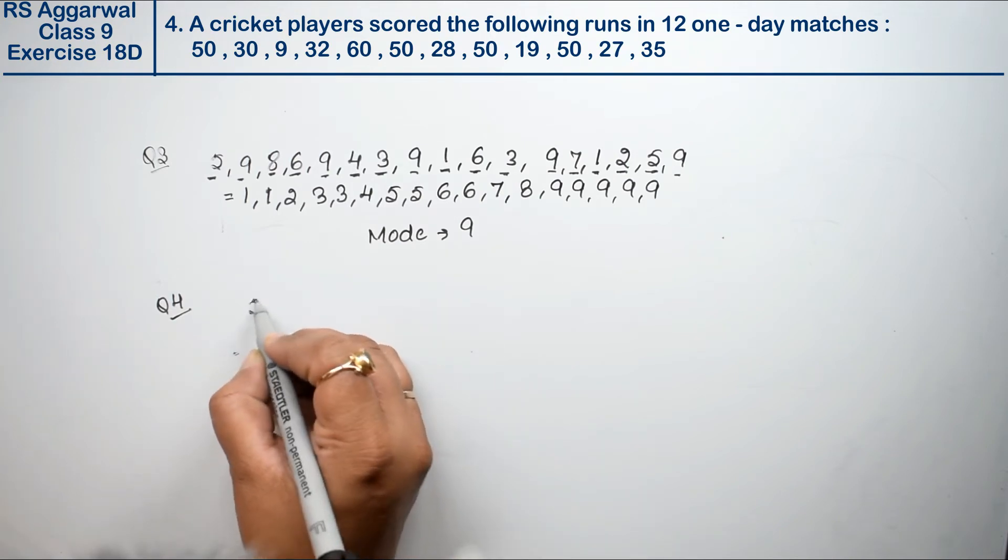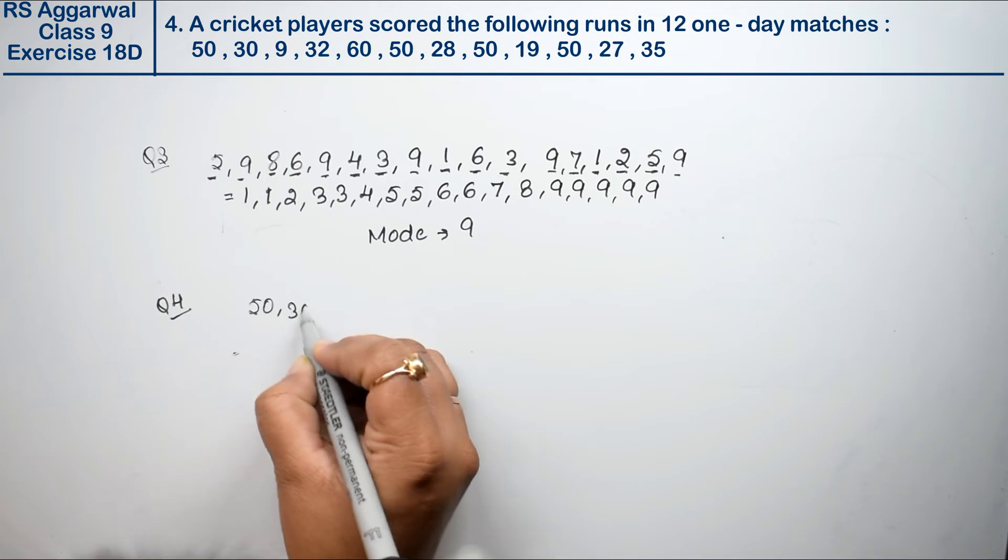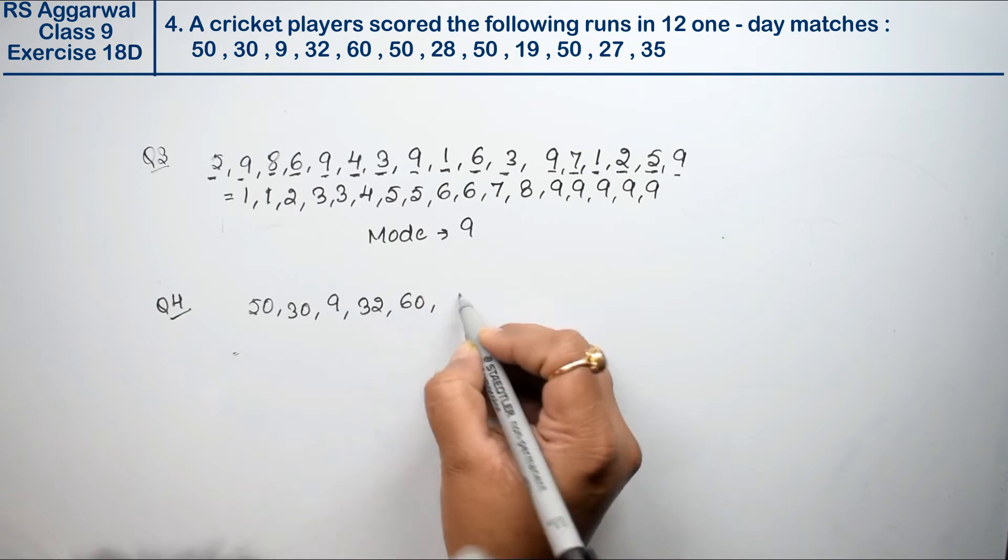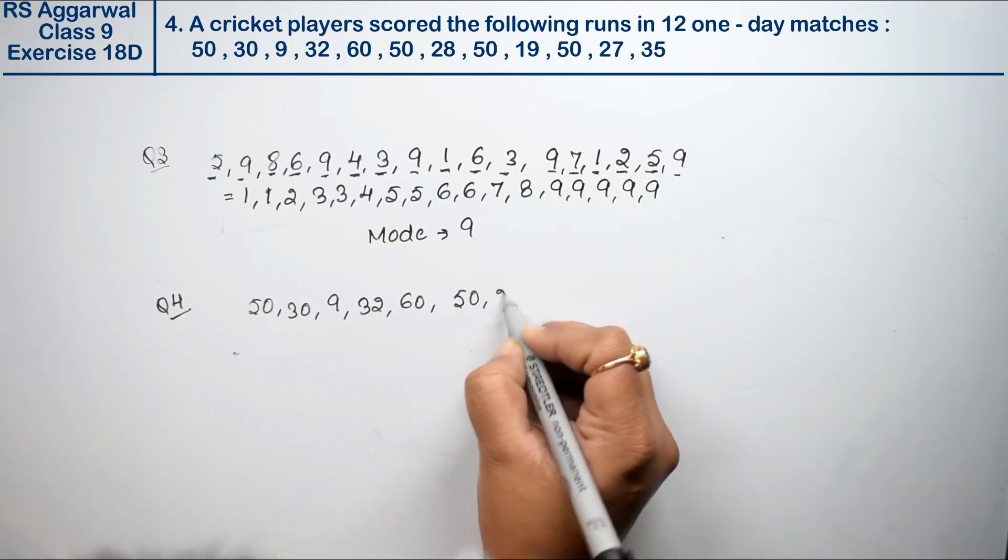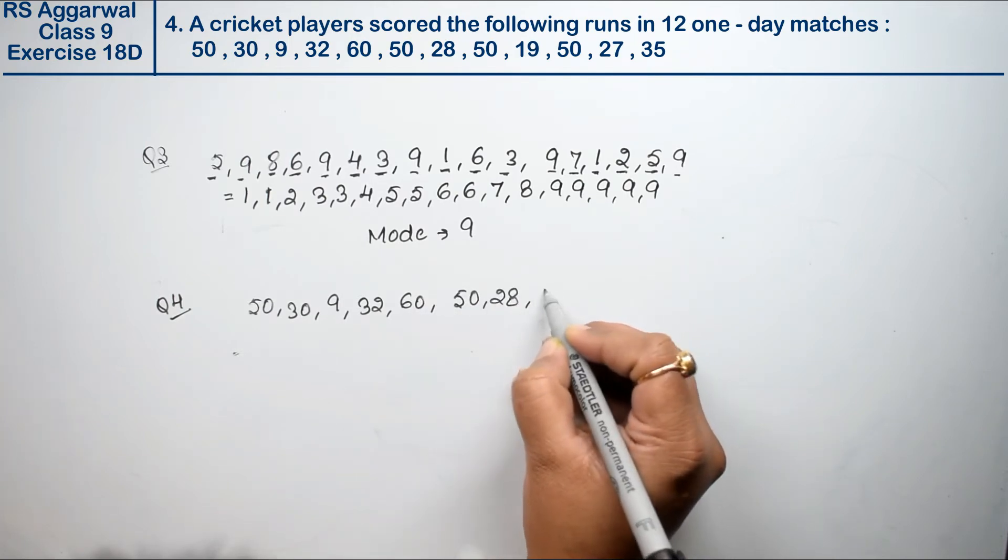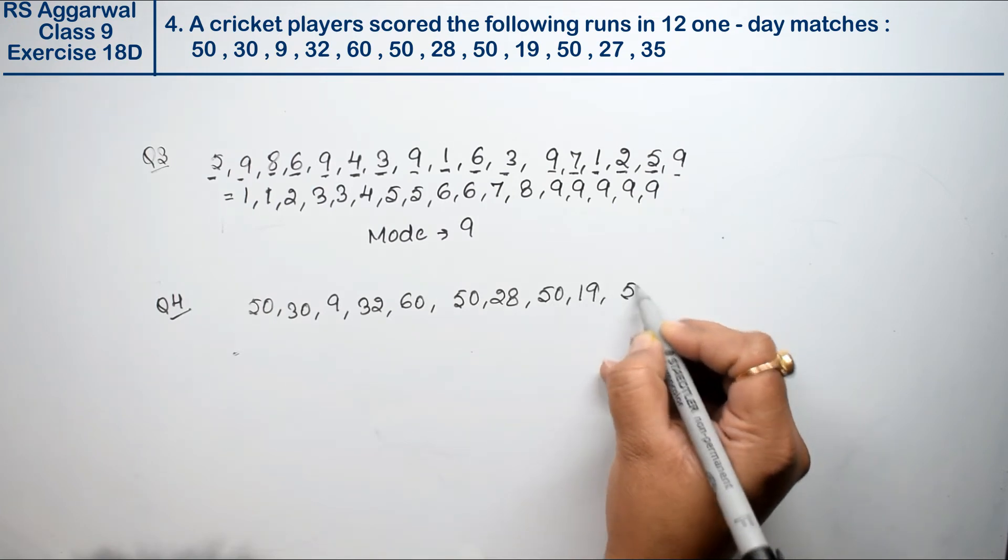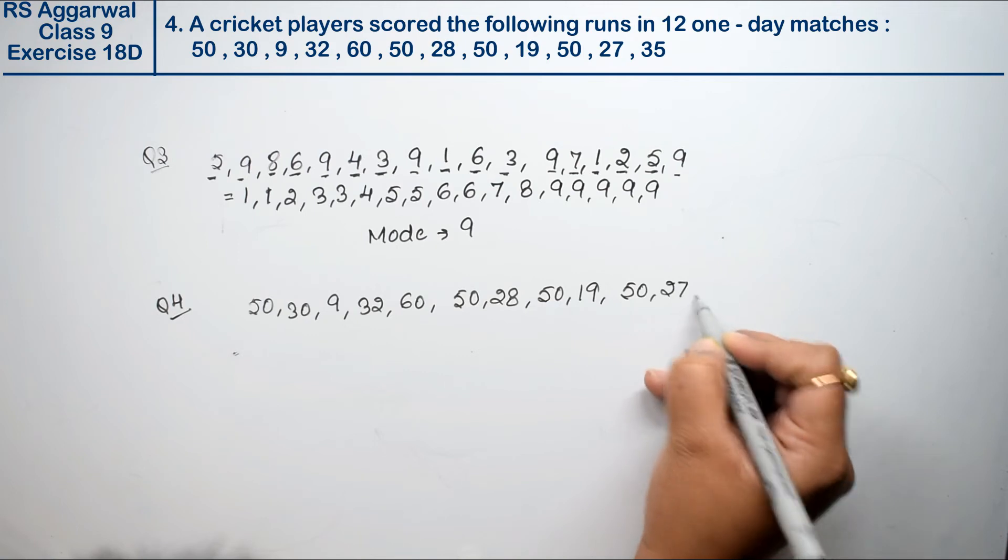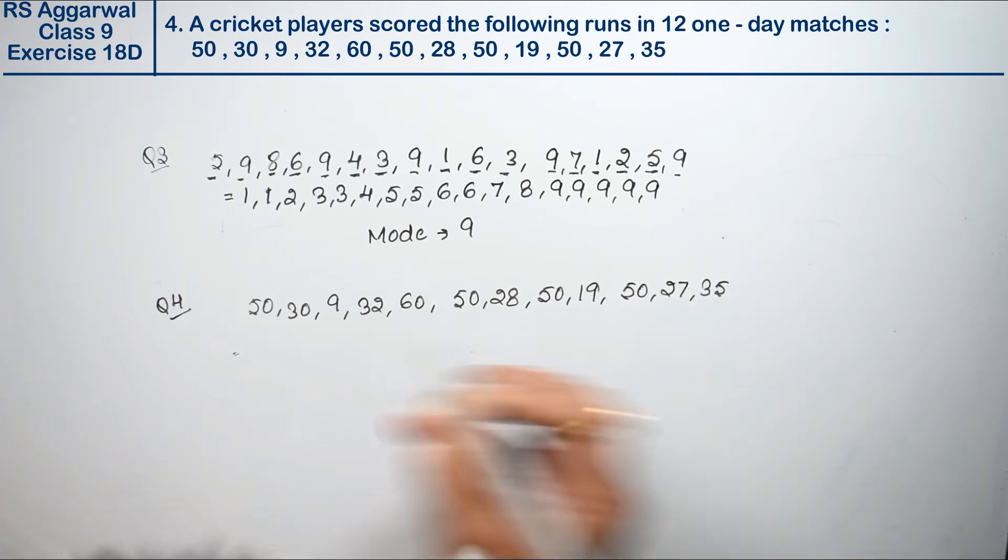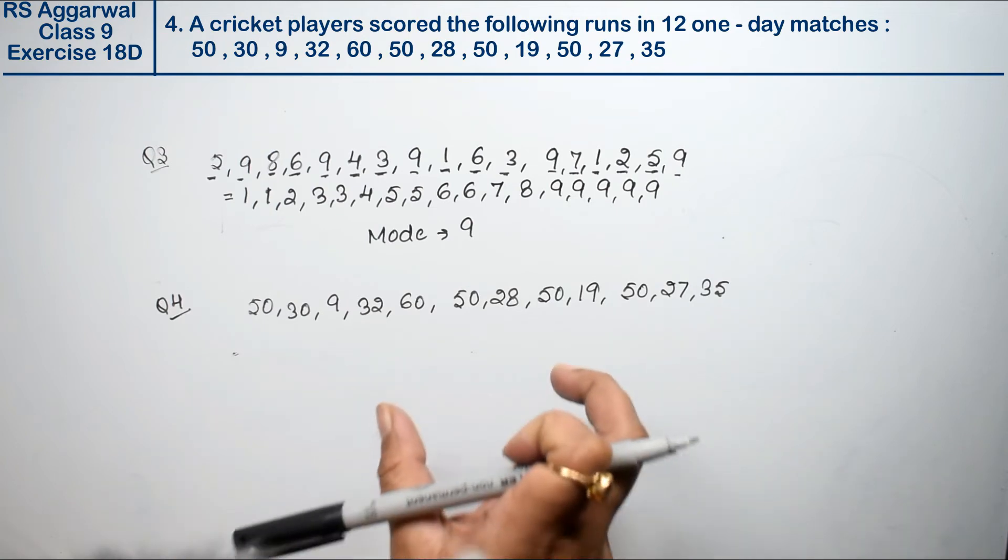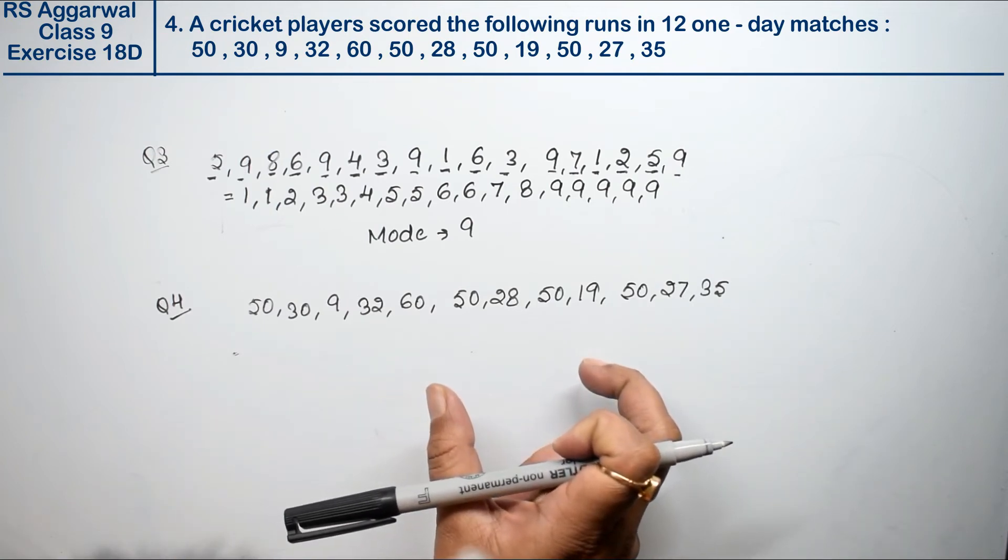First is 50, then 30, then 9, then 32, then 60, then 50, then 28, then 50, then 20, then 50, then 27, and then 35. These are 12 days of different runs which the player scored.